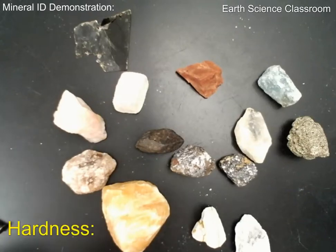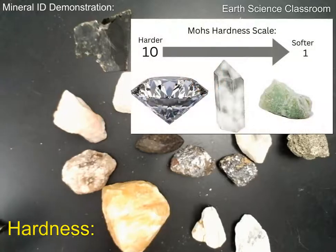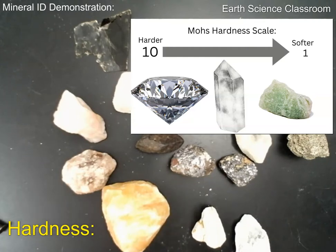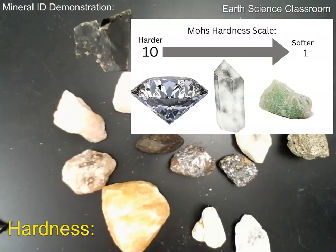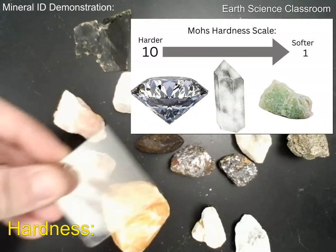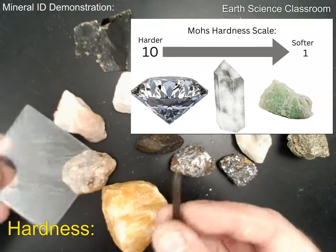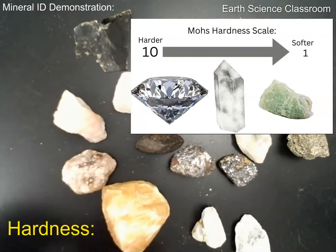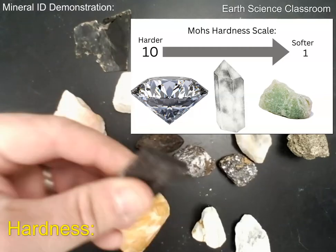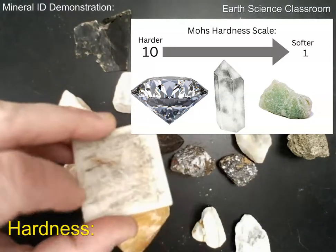The last property is hardness. The Mohs hardness scale runs from 1 to 10 — 1 being the softest minerals, 10 being the hardest, with diamond as the classic example at 10. To test for hardness, you need a glass plate, a steel nail, a penny, and you can also use the steel plate or streak plate. These materials each have a known hardness value on the scale.